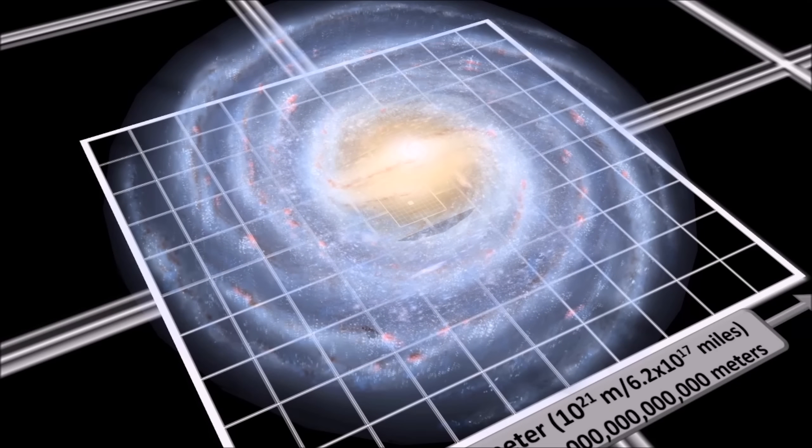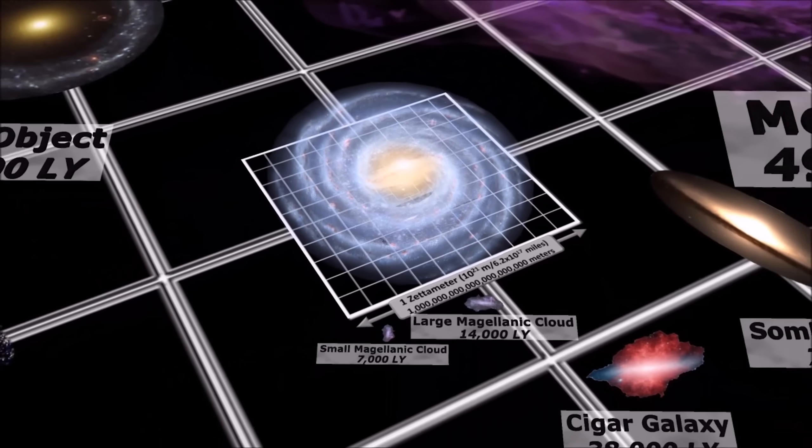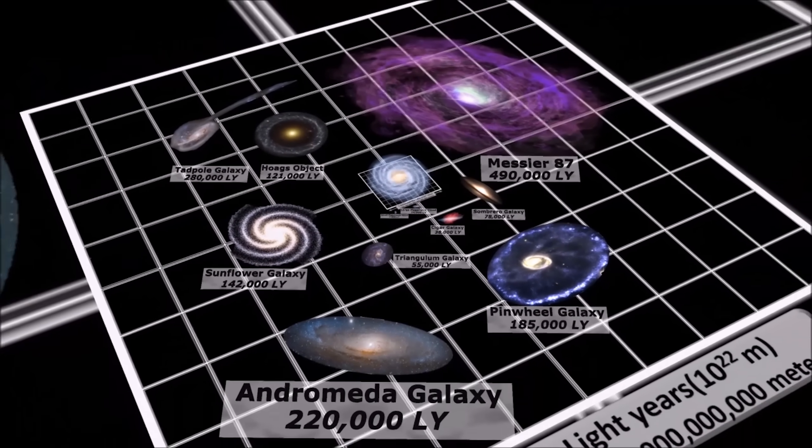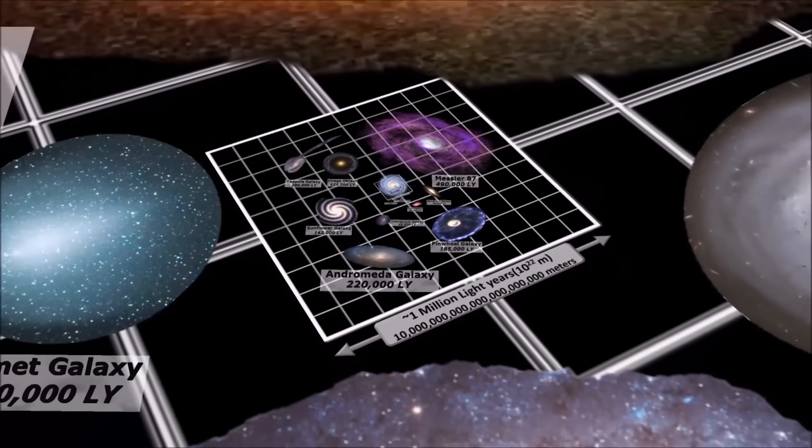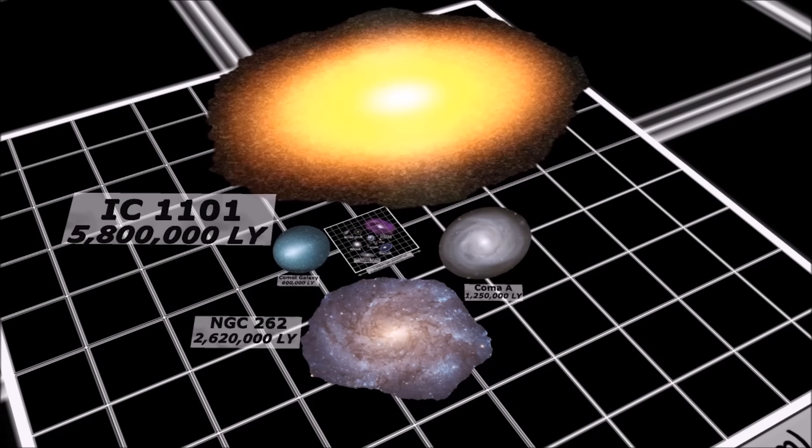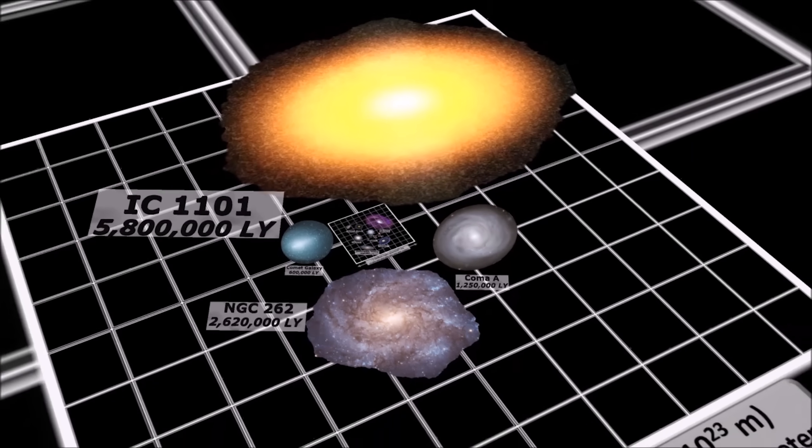Our Milky Way, home to hundred billion stars, our sun being just one of them. It's just one of trillions of galaxies out there with billions of stars. And some are really really big. IC 1101, the largest galaxy. It contains 100 trillion stars and quadrillion planets. Could there be one with life?